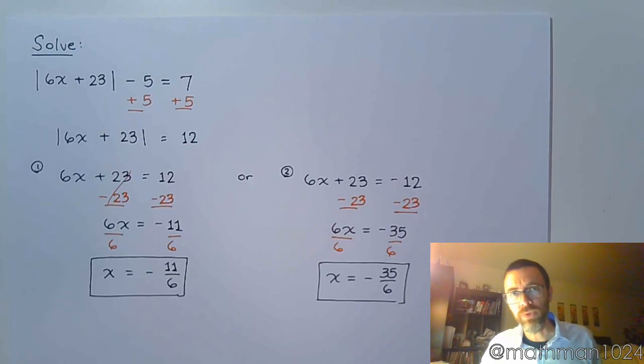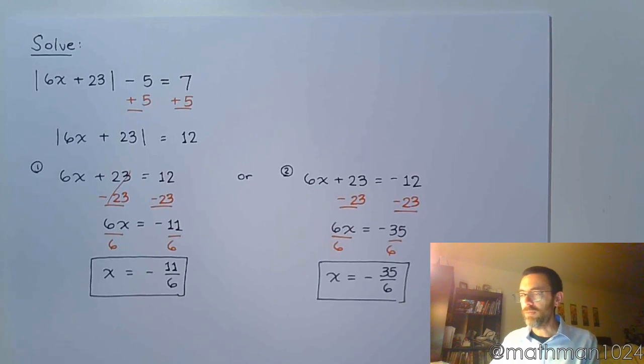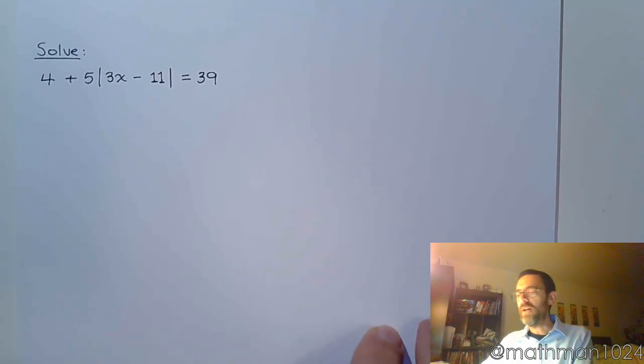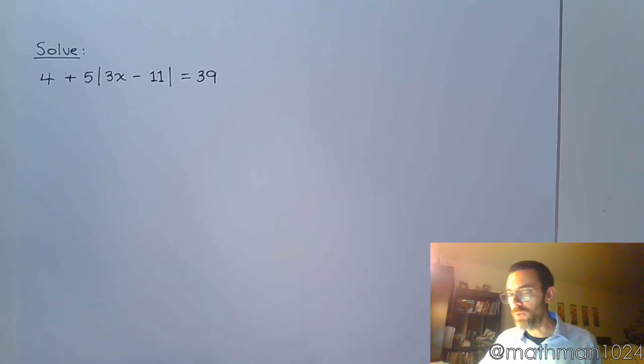Again, get the absolute value by itself first before you separate it into your two equations. Just like in this one down here. 4 plus 5 times the absolute value of 3x minus 11 equals 39. So before I do anything, get the absolute value by itself.